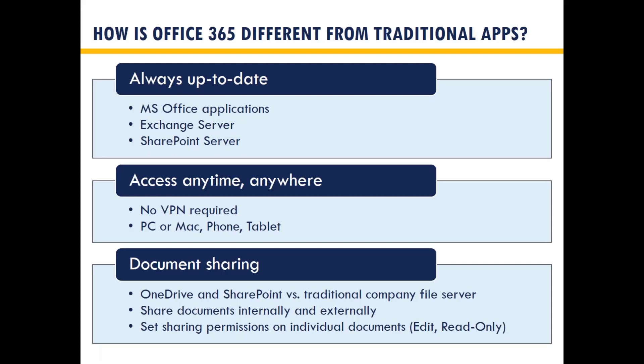Because it's cloud-based, you can access Office 365 solutions anytime from anywhere — no VPN required. You don't have to connect to the office and then get to your data from there. You can access it through a PC, a Mac, a tablet, or a phone. Office apps are available for Android and iOS mobile devices. So when you're traveling or out in the field, it's easy to get to your data. OneDrive and SharePoint replace the traditional company file server, putting your files somewhere they can be accessed all the time versus being stuck in a file server where you have to be in the office or connected through VPN.